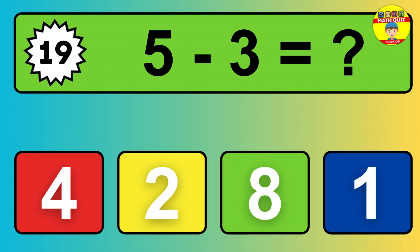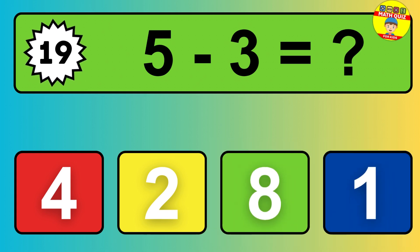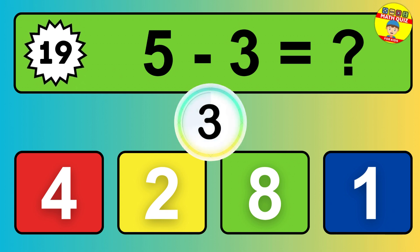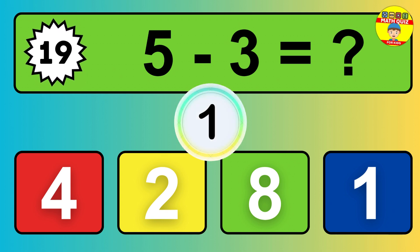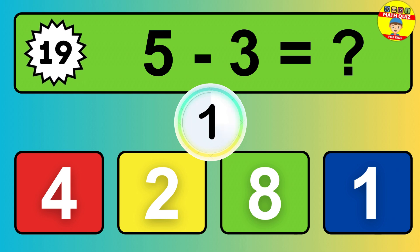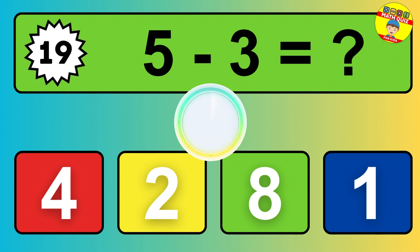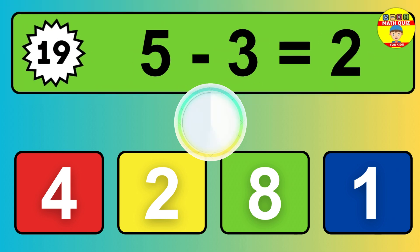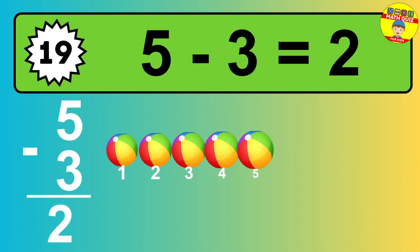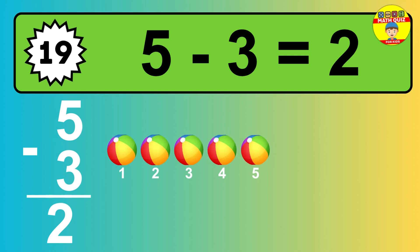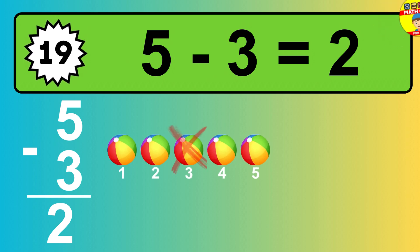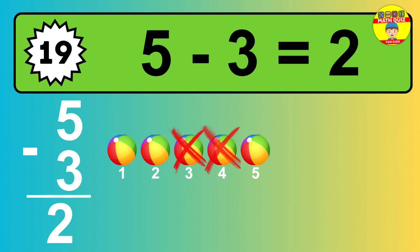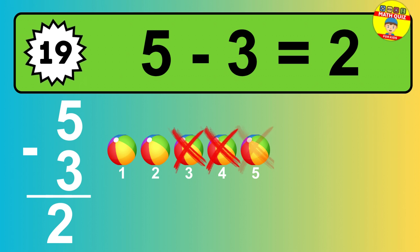Question 19: 5 minus 3 equals what? The answer is, 5 minus 3 is 2. Let's count it: 1, 2.